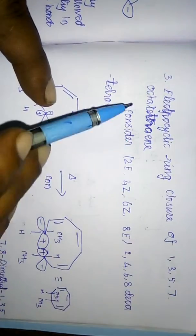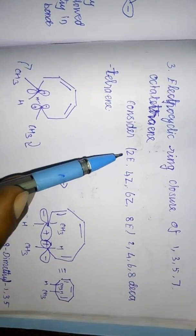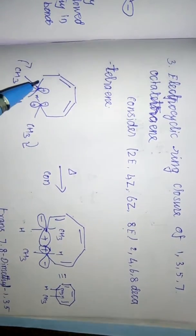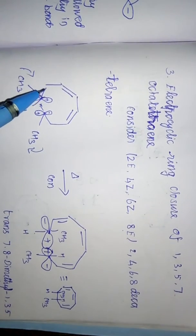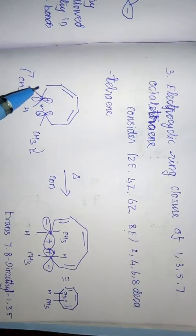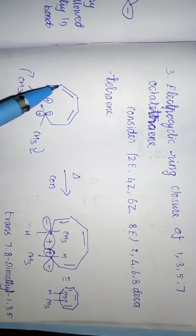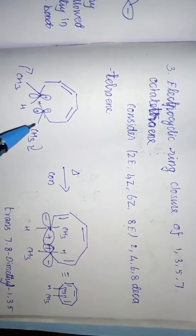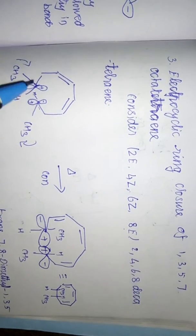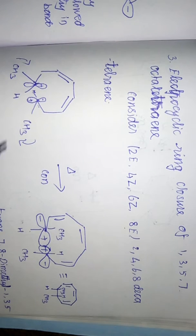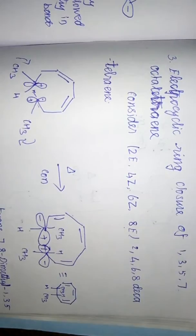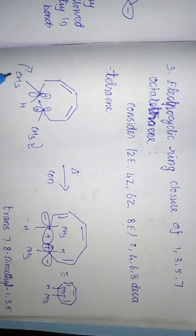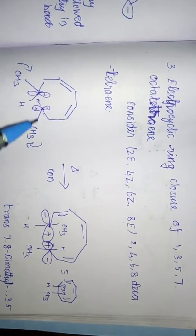Next, consider the electrocyclic ring closure of 1,3,5,7-cyclooctatetraene. Take the example 2E,4Z,6Z,8E-decatetraene. Instead of drawing each double bond, we use the HOMO. With 8 pi electrons, this is a 4n pi system. For 4n pi systems under thermal conditions, conrotation applies.